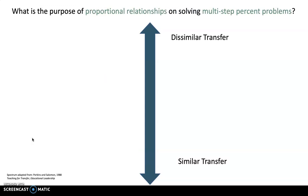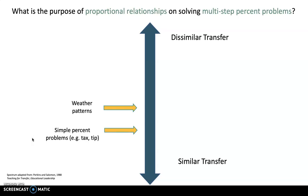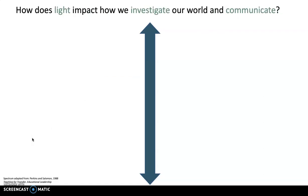Here's a mathematics example: what is the purpose of proportional relationships in solving multi-step percent problems? Similar transfer might start with simple percent problems such as tax and tip. Then I'd intentionally think about increasingly dissimilar examples — situations where it's not as easy to set up — maybe weather patterns. And then transfer to something even more dissimilar, such as calculating the speed of dinosaurs. Just quick examples to get your juices flowing and start thinking about how to set up a unit that teaches for transfer.